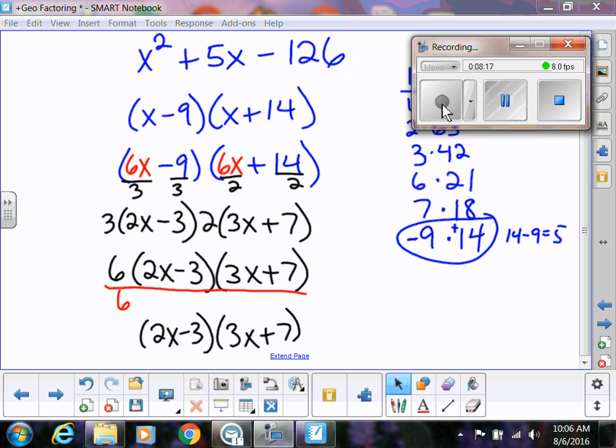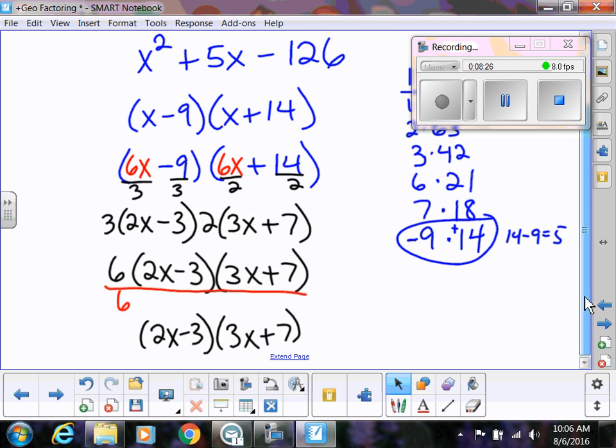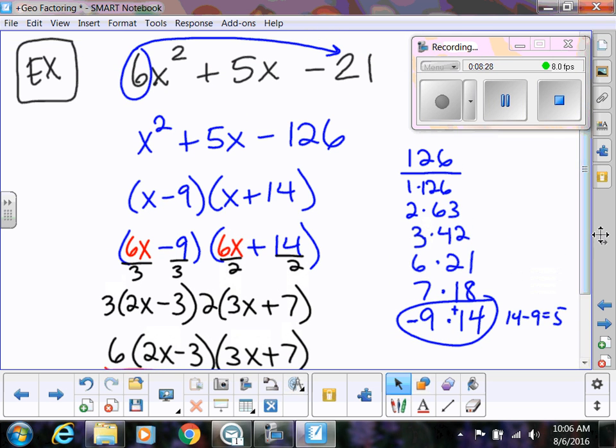You can see at the bottom here that I'm getting the answer (2x - 3)(3x + 7). I'll scroll up so you can see my process. I did my a times c, that gave me negative 126. You might have had to use a calculator to get your factors. I was definitely going to miss the 7 times 18, so just be aware that sometimes you might have to break out your calculator.